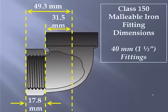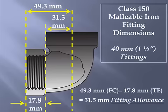So let's take a look at the math on that. 49.3 millimeters, which was the face-to-center measurement, minus the 17.8 thread engagement dimension, resulted in a 31.5 millimeter fitting allowance.